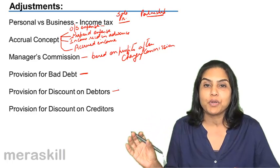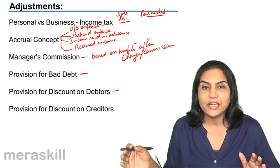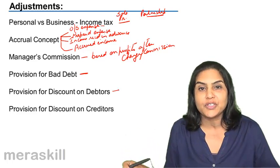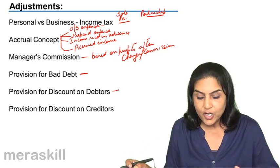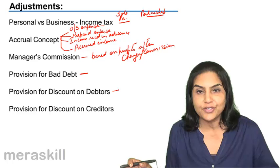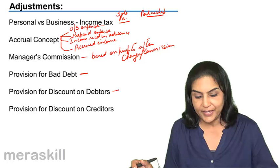Following the matching principle, we try to create a provision for such discount in the current year so that since this particular revenue has arisen in the current year, the charge for discount also can be made in the current year.